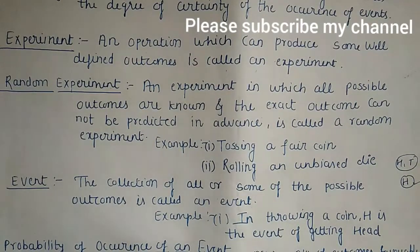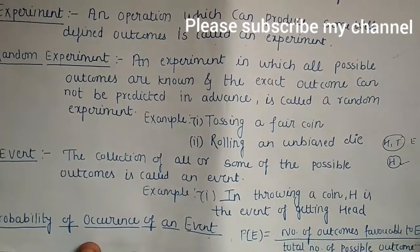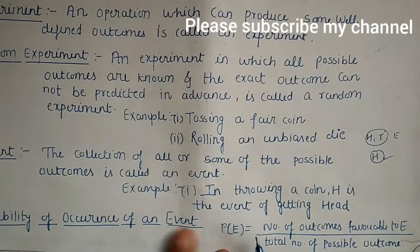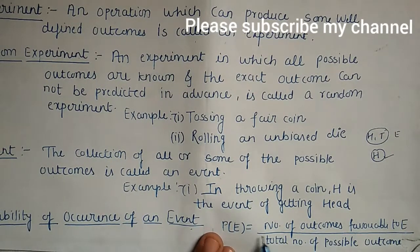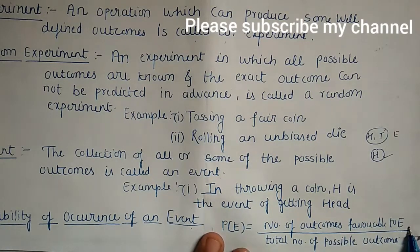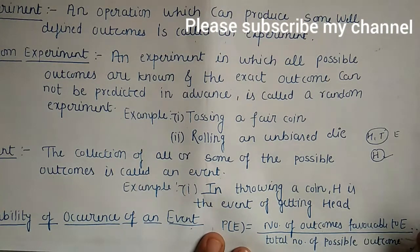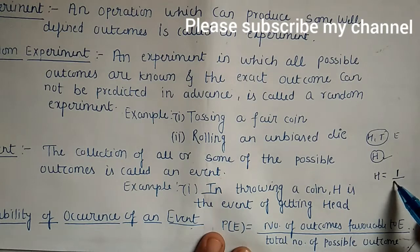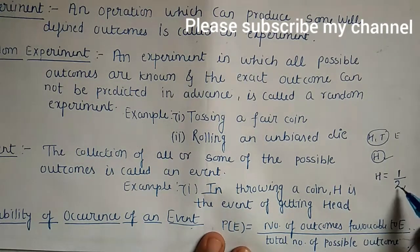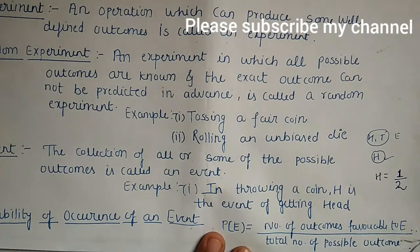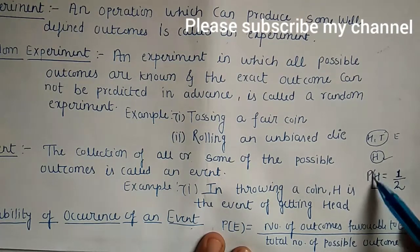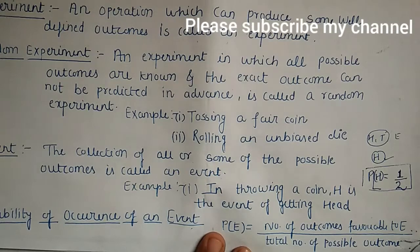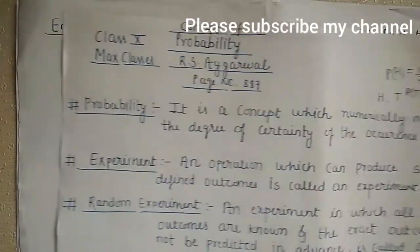Now move to the next point: probability of occurrence of an event. It is a simple formula which you have also studied in class nine. P(E) equals the number of outcomes favorable to E divided by the total number of possible outcomes. For example, if we toss a coin and want the probability of getting a head: head can occur only once, so favorable outcomes = 1. Total outcomes are head and tail = 2. So the probability of getting a head is 1/2.